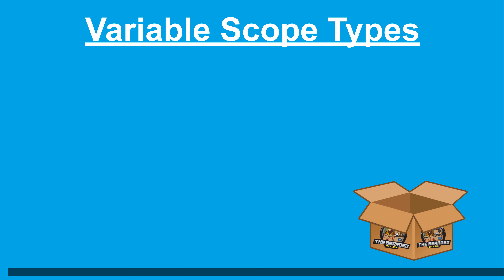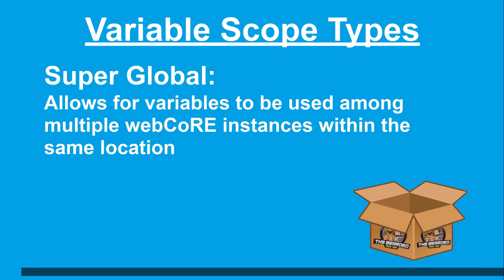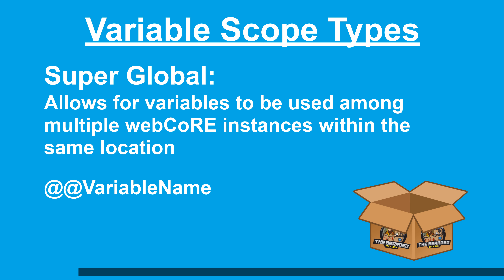The third variable scope is superglobal. This type of variable allows variables to be used among multiple WebCore instances within the same location. These variables have a double at symbol in front of their names and are created the same way as global variables — you just have to put an extra at sign in front of the name. Everything covered for global variables will apply to superglobal variables, except they can be interacted with from pistons in other WebCore instances.